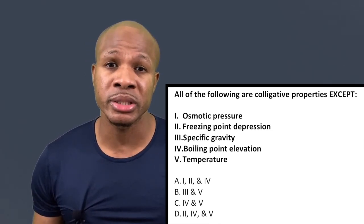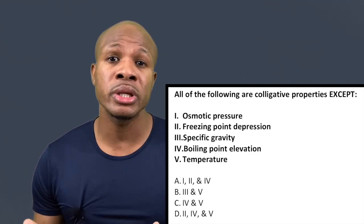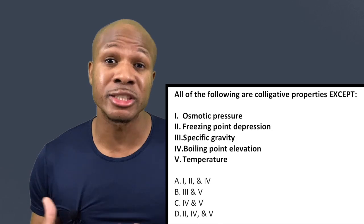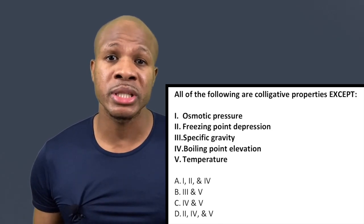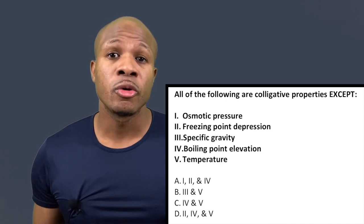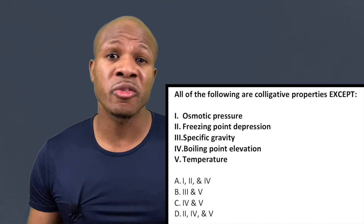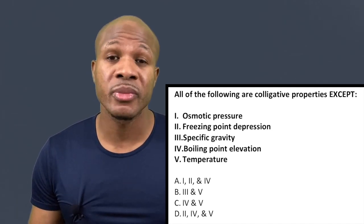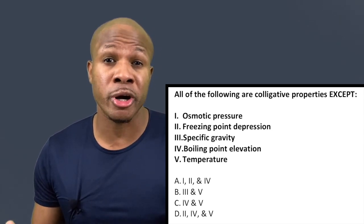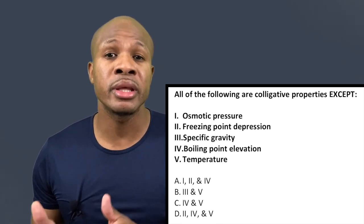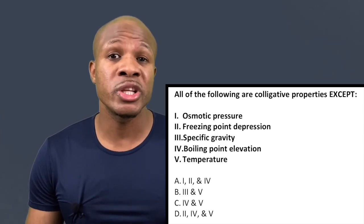In order to get this question right you have to know what a colligative property is. A colligative property is a property that depends only on the number of solutes in the solution. Another way of saying that is that a colligative property is a property that changes with osmolarity — osmolarity being the concentration of particles within a solution.